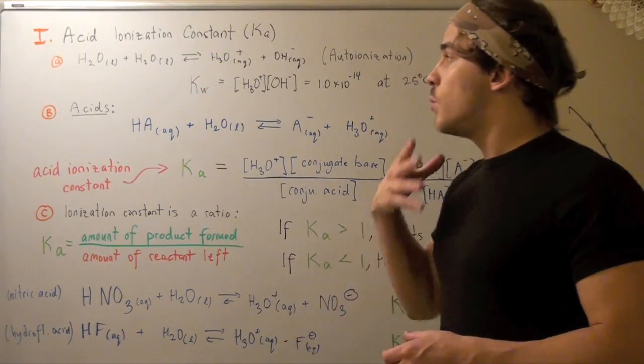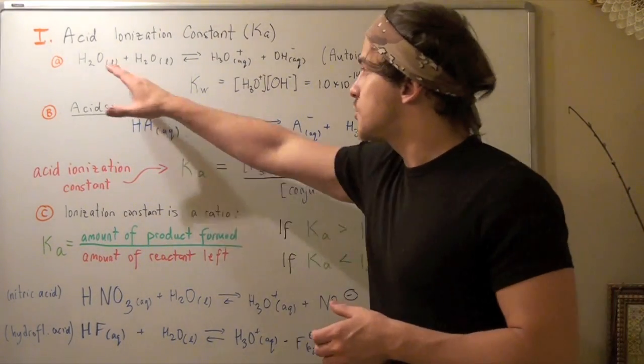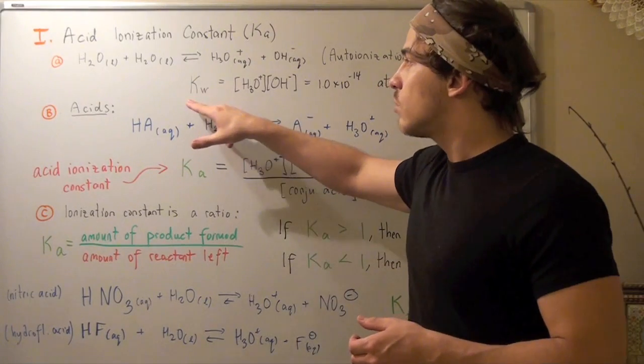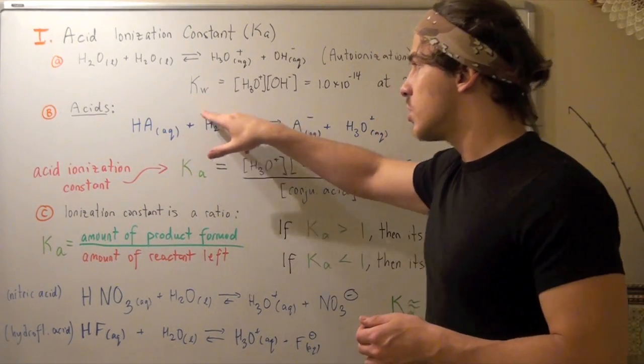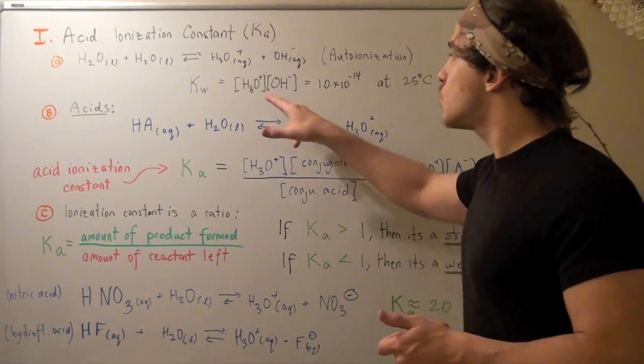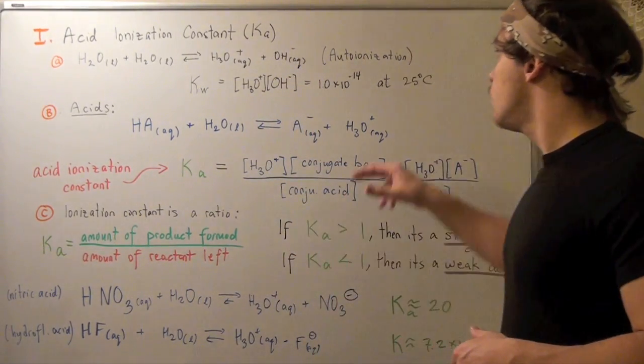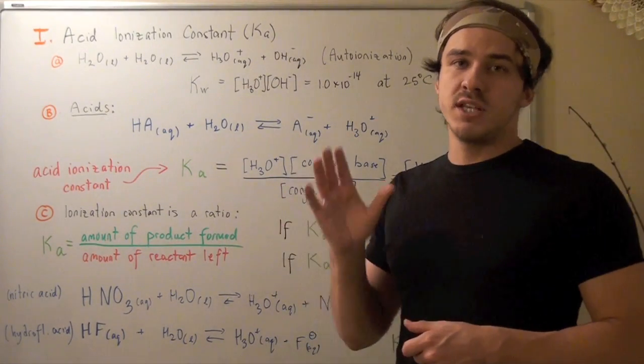So now we can write the equilibrium equation for this reaction. Kw, our ionization constant for water, is equal to hydronium concentration times the hydroxide concentration. At 25 degrees Celsius, this equals 1.0 × 10⁻¹⁴.